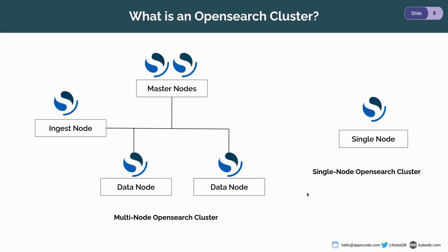OpenSearch can operate as a single node or multi-node cluster. For example, a five-node cluster can have two dedicated master nodes, one dedicated ingest node, and two dedicated data nodes. The master node manages overall cluster operations and keeps track of cluster state, including creating and deleting indices, tracking nodes joining and leaving, running ping requests, and allocating shards. The ingest node pre-processes data before storing it by running an ingest pipeline. The data node stores and searches data, performing indexing, searching, and aggregating operations — it needs more disk space than any other node type.